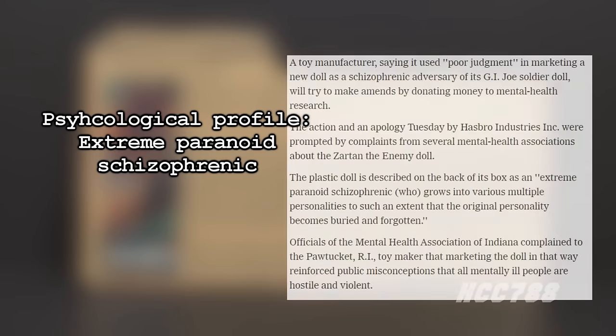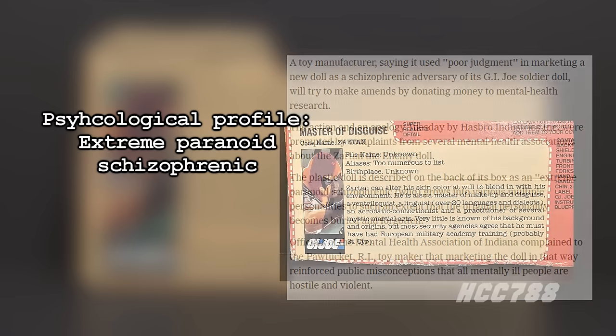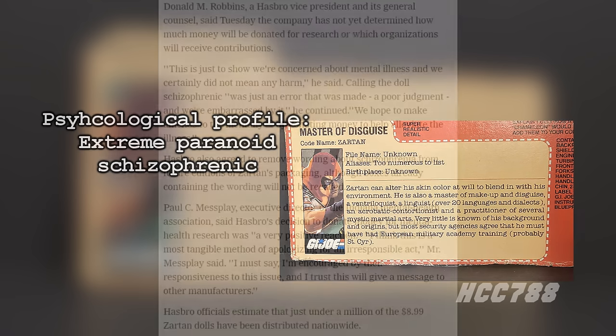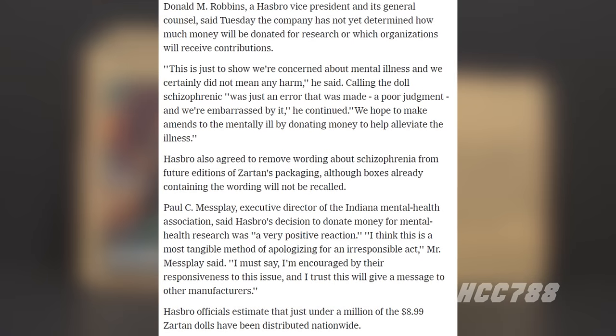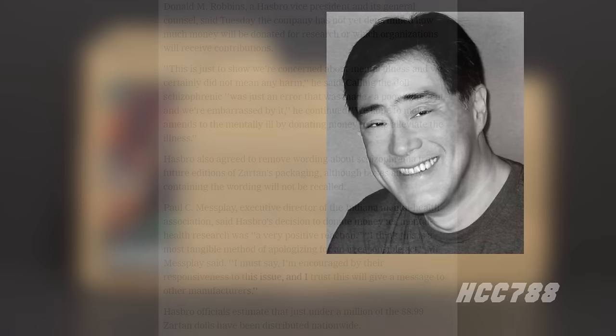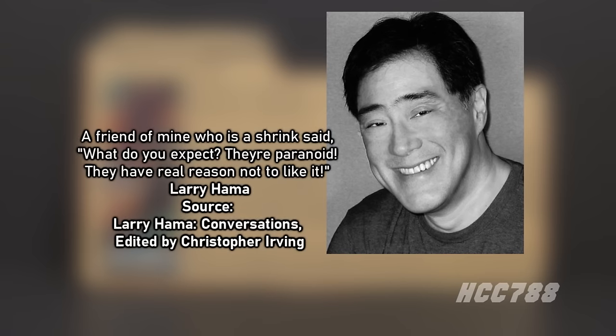The psychological profile describes Zartan as an extreme paranoid schizophrenic who grows into various multiple personalities to such an extent that the original personality becomes buried and forgotten. This text conflates schizophrenia with multiple personalities, which it is not. For all the effort Larry Hama put into including accurate real-world references in these file cards, this one was inaccurate and turned out to be a costly mistake. The Mental Health Association of Indiana objected to the depiction of a mentally ill person as violent, demanded Hasbro recall the Zartan doll, and Hasbro eliminated the psychological profile from later releases and apologized, donating money for mental health research.